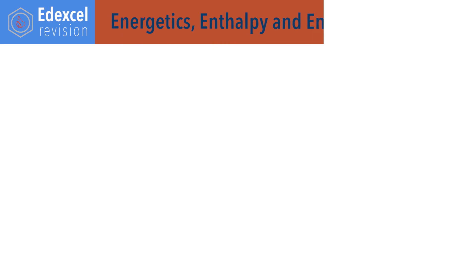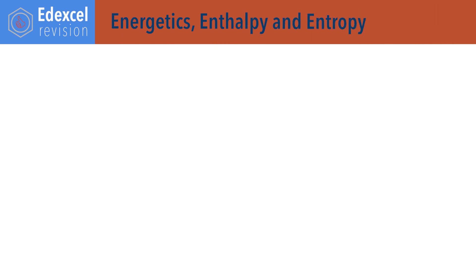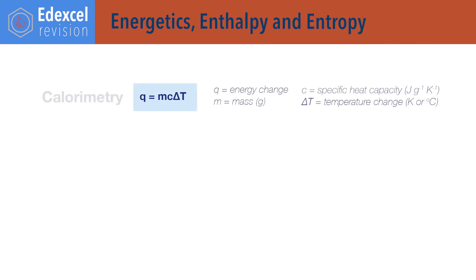For energetics, enthalpy and entropy. Q equals MC delta T, where Q is energy change, M is mass, C is specific heat capacity, and delta T is change in temperature. Note that the units for Q can be either joules or kilojoules, depending on the units given for specific heat capacity. Temperature change can be in either degrees Celsius or kelvin, as a change in one degree Celsius is the same as a change in one kelvin.